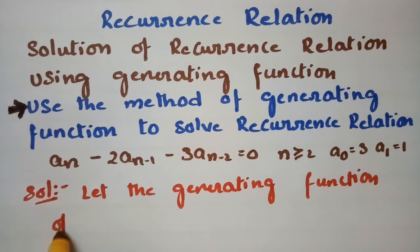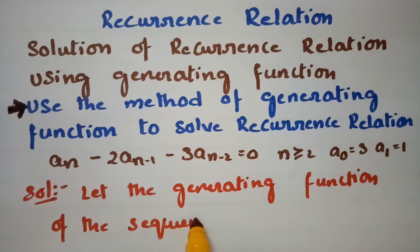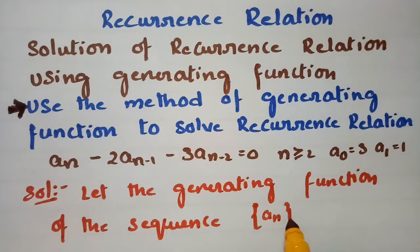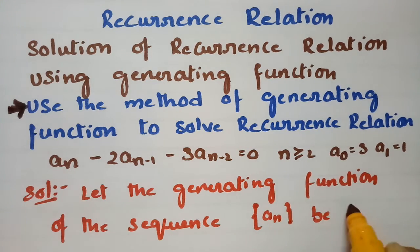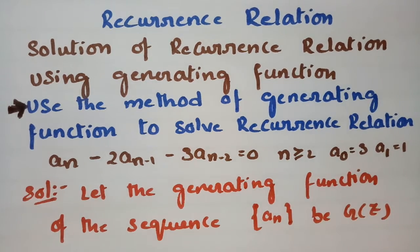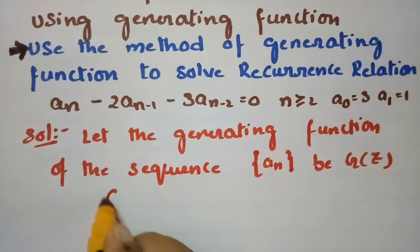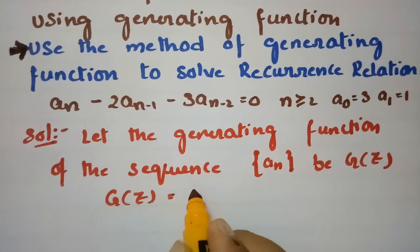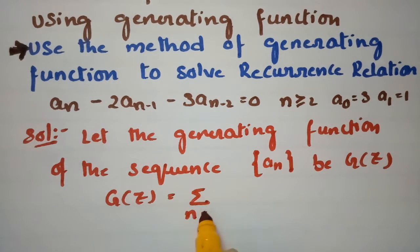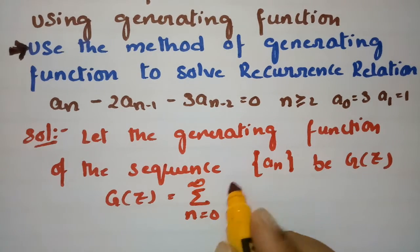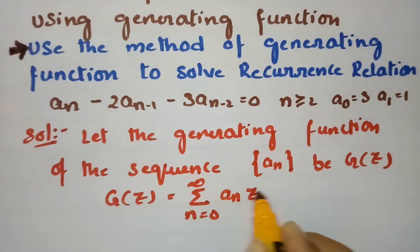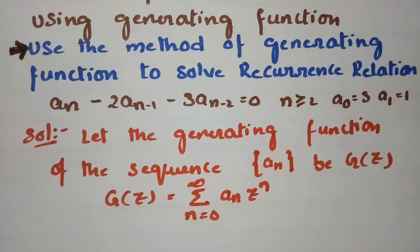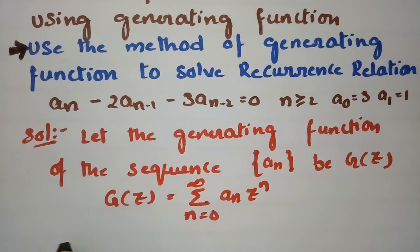Let the generating function of the sequence aₙ be G(z). G(z) can be written as the summation from n equals 0 to infinity of aₙ times z to the power n.